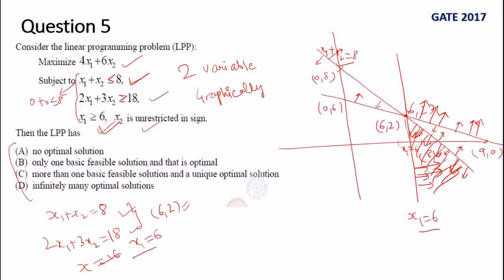So that means the answer is it has only one basic feasible solution and that is optimal. Because at this step we get some infinitely many feasible solutions, and then out of those feasible solutions we select the optimal.